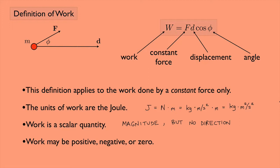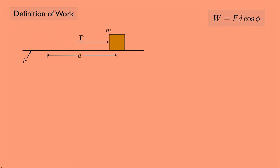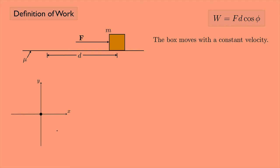Let's look at a specific example. Suppose we have a box of mass m and we're going to push on this box with force F. There is a surface with friction, and the coefficient of friction is mu. We're going to push this box a distance d, and the box is moving with a constant velocity. Looking at the free body diagram: the box is the dot at the center. The forces acting on it are the applied force, the normal force, the weight, and the force of friction, which opposes the direction of motion.